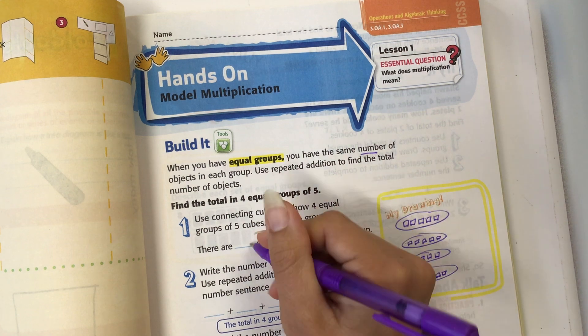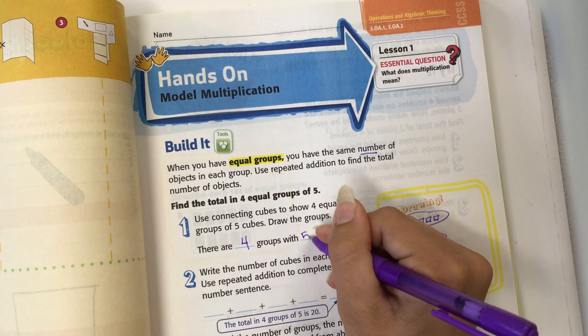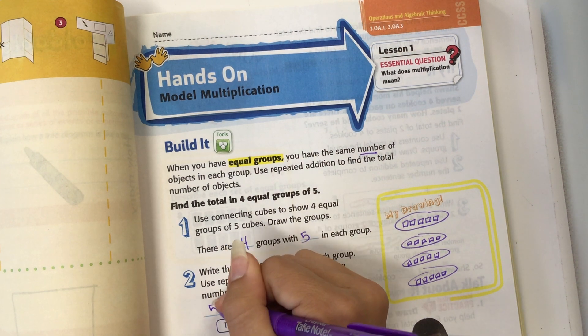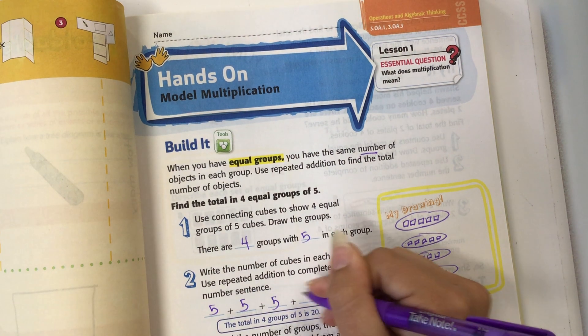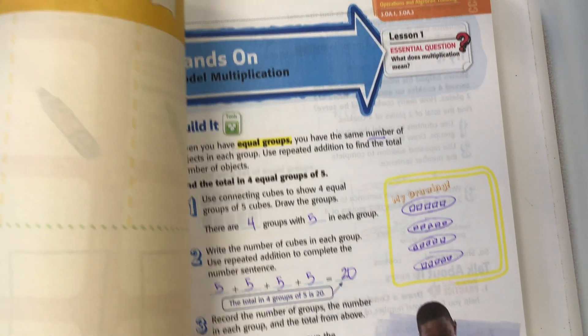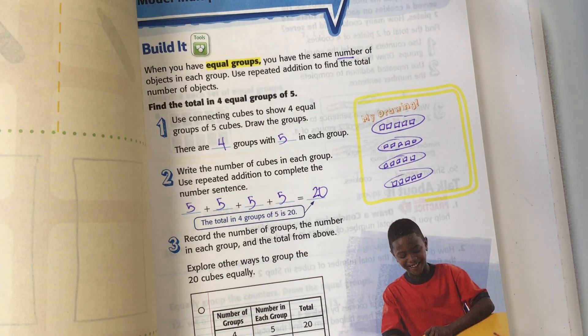There are four groups with five in each. Write the number of cubes in each group and use repeated addition to complete the number sentence. So I would say five plus five plus five plus five equals 20. So the total in four groups of five is 20.